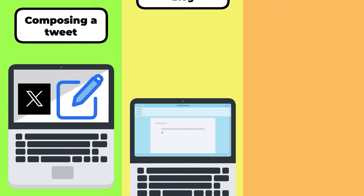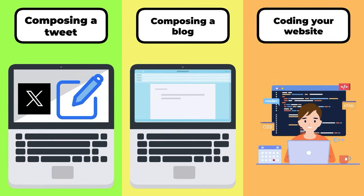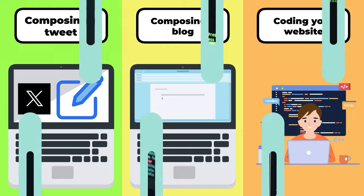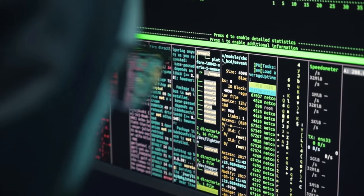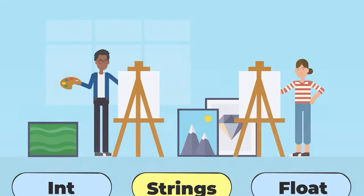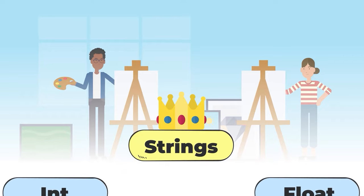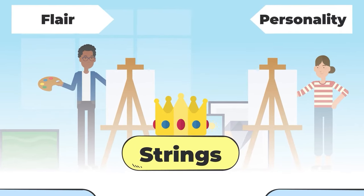Strings — str. Imagine you're composing a tweet, a blog, or even coding your website. Strings are what allow you to play with text and bring color to the otherwise gray world of coding. These are the artists of the data type community, adding flair and personality.